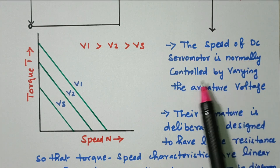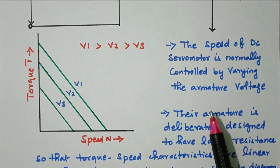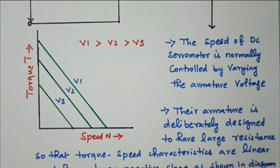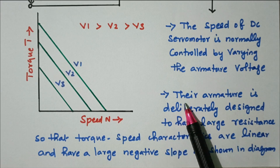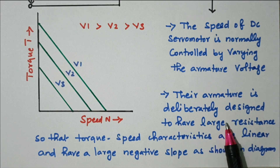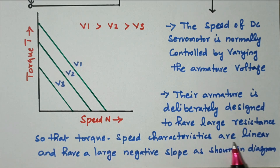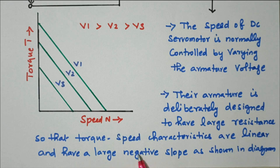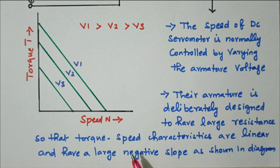The speed of a DC servo motor is normally controlled by varying the armature voltage. The armature is deliberately designed to have large resistance RA, so that the torque-speed characteristics are linear — varying in a linear manner, not parabolic — and have a large negative slope. Any small change in voltage will produce a change in speed and torque in a linear manner.